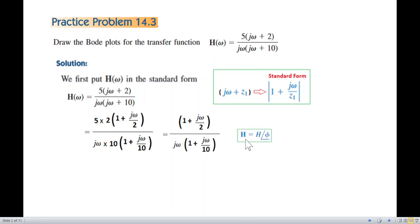In phasor form, we express it in terms of magnitude and angle. So we write magnitude and angle formulation. The magnitude calculation, and the angle: in the numerator we have plus tan inverse omega over 2. In the denominator we have minus tan inverse omega over 10.